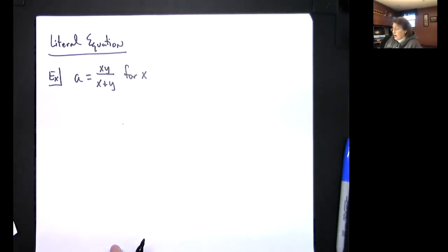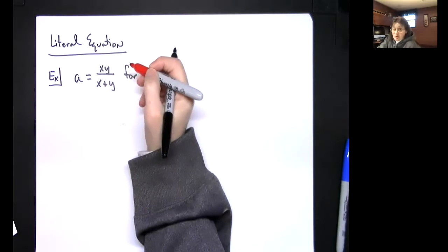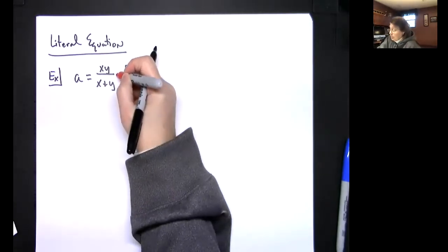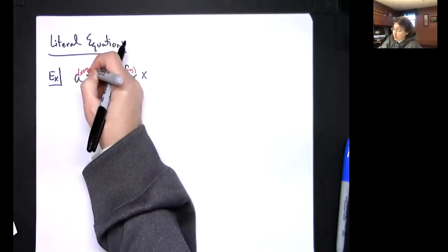Let's go ahead and multiply both sides by x plus y to get rid of the fraction because nobody likes fractions. So I'm going to multiply this side by x plus y, and then we'll multiply this side times x plus y.